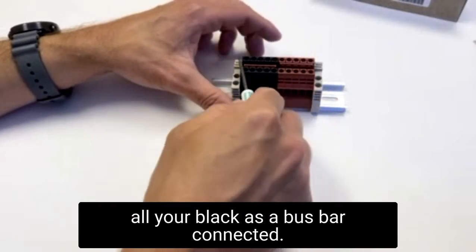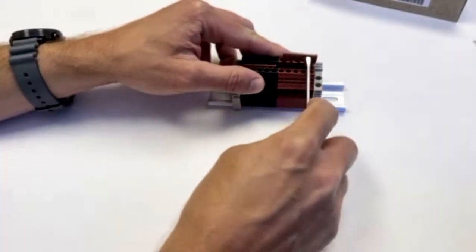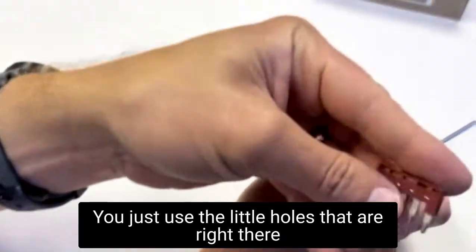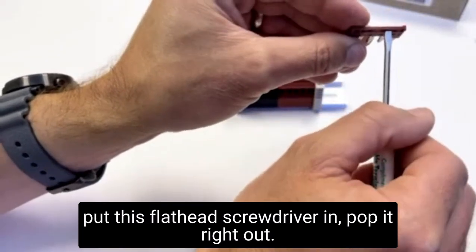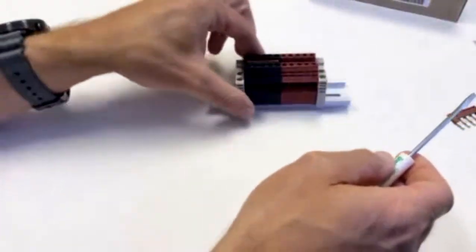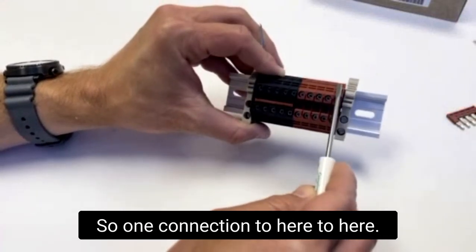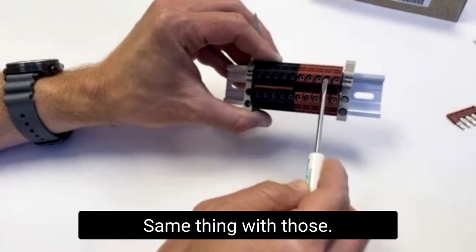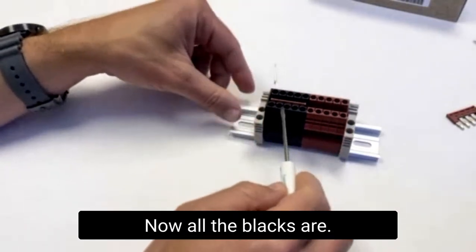If you ever wanted to, let's say you want all your blacks as a bus bar connected, but you didn't want the red ones connected, you just use the little holes that are right there or the little ridge or holes that you can put this flathead screwdriver in, pop it right out. Now these are all single in, single out, so one connection to here to here. They just aren't connected down the line. All the blacks are because they still have the jumpers in there.